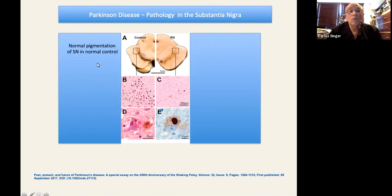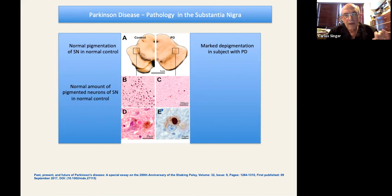When it comes to a Parkinson's brain, you see marked depigmentation. When you go into light microscopy, you have a normal amount of pigmented neurons in the normal control. When you go to the patient with Parkinson, there is a marked loss of those pigmented neurons. Something has happened, right?